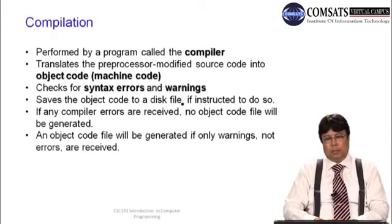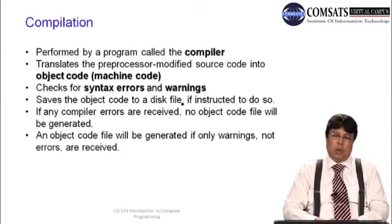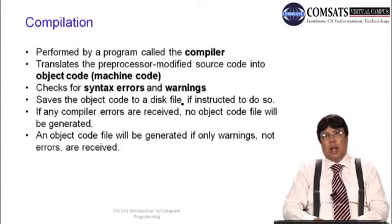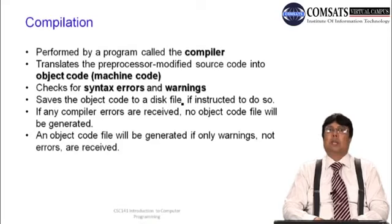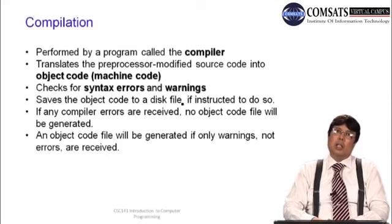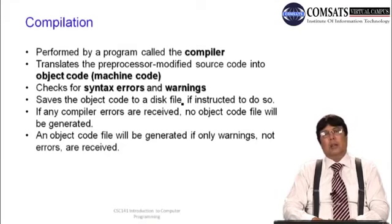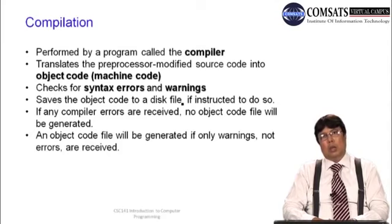A quick revision of compilation. Compilation is done by a program called the compiler that translates your source code into object code, also called machine code. It checks the syntax according to the language — you have a compiler for each language, such as C, C++, or Fortran. It saves the object code onto the disk provided there are no errors or you have instructed it to save the object code.